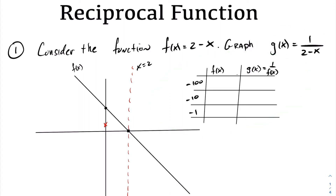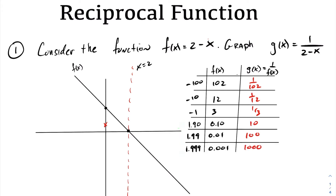If we let x be negative 100, f(x) is 102. If x is negative 10, f(negative 10) is 12. And f(negative 1) yields 3. Therefore, the reciprocal function g(x) will be 1 over 102, 1 over 12, and 1 over 3. So f(x) is decreasing while g(x) is getting larger. As x gets closer and closer to 2, g(x) approaches positive infinity.